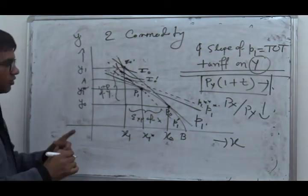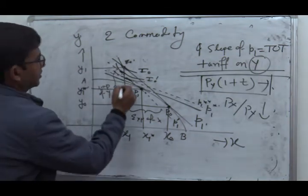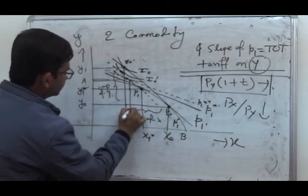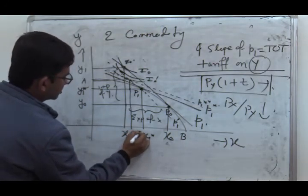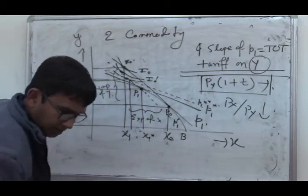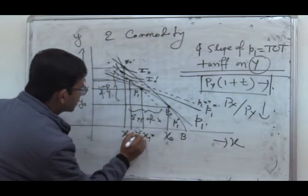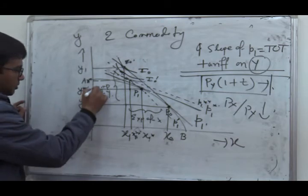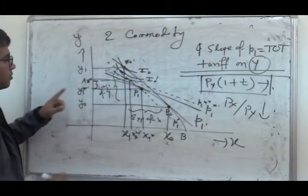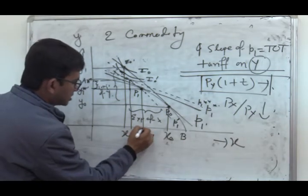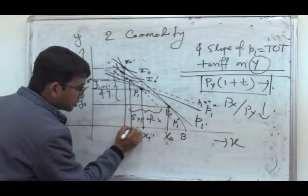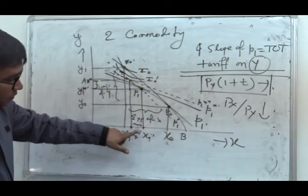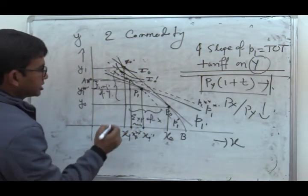Looking at the trade effect: after tariff, consumption of X is X1 star star and consumption of Y is Y1 star star. Since this is the post-tariff production of Y and this is the post-tariff consumption of Y, the difference gives the import of Y. Similarly, the difference between post-tariff production and consumption of X gives the export of X after imposition of tariff.